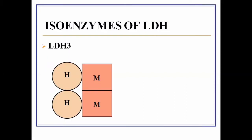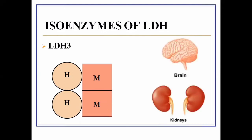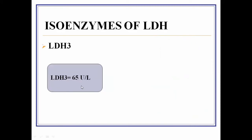LDH3 is the third isoenzyme. It is also a tetrameric enzyme, made up of two H-type and two M-type polypeptide chains. LDH3 is most specifically present in the brain and kidneys. Its normal value in blood is 65 units per liter.